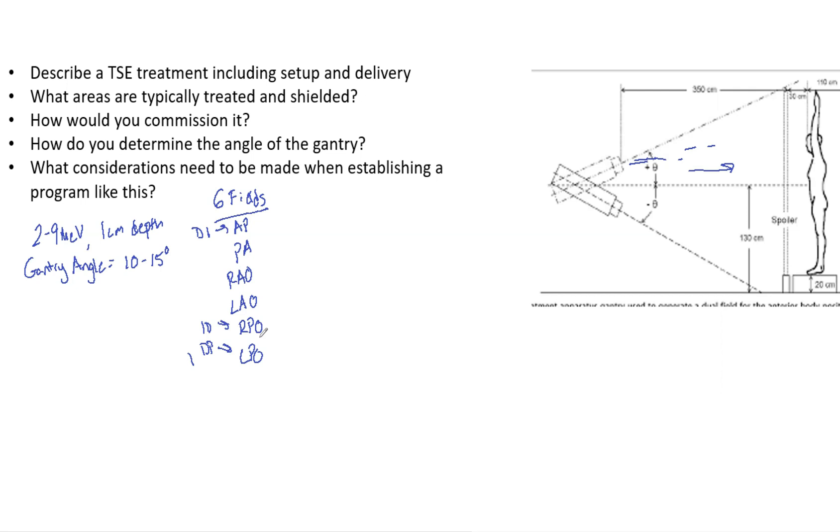The patient is at—what's actually mentioned here says 350 cm, but I'm used to somewhere around 400 centimeters, four meters. Again, that's dependent on your personal setup. You could also put what they call a beam spoiler: a 1 cm acrylic plate in front of the patient. Ideally, what we want is that 1 cm depth and 10% uniformity. For these treatments, oftentimes we are treating mycosis